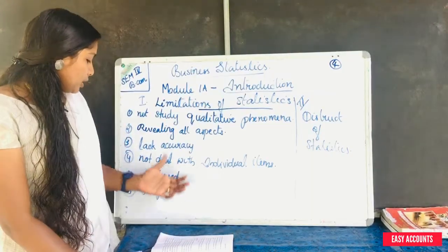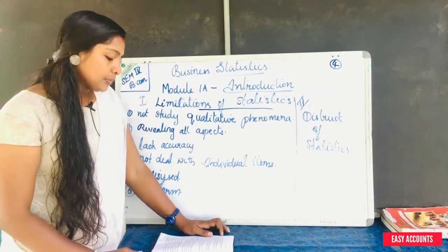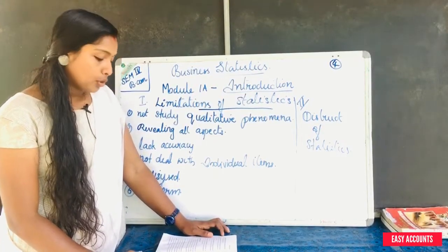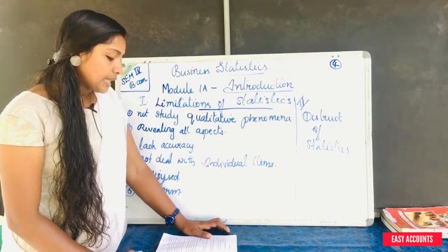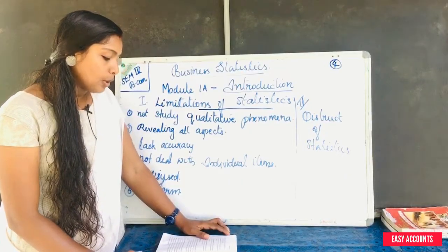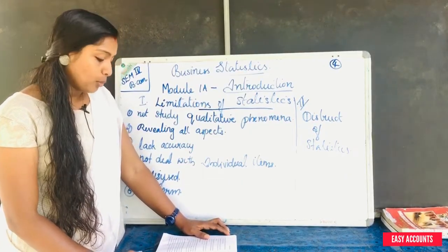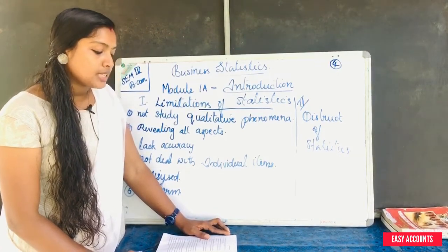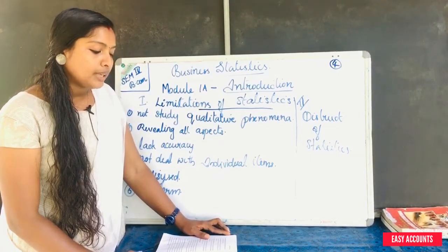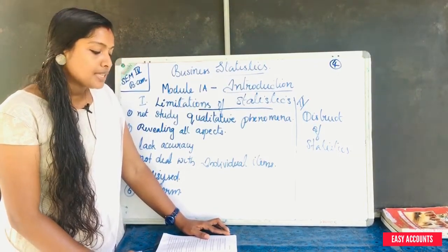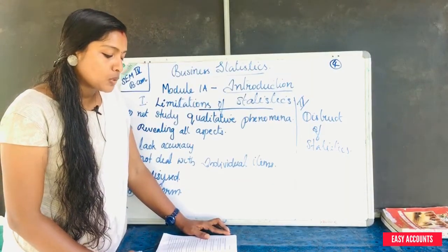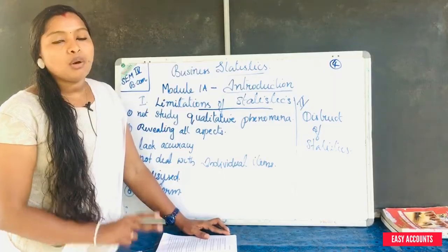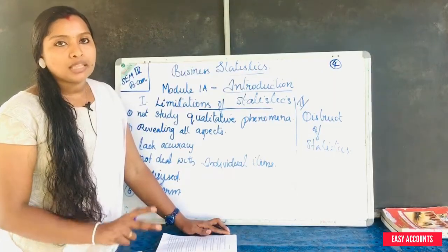The first item is the limitations of statistics. There are six points. First, statistics does not study qualitative phenomena. Then, statistics is incapable of revealing all aspects of a problem. Then, statistical laws lack accuracy. Statistics does not deal with individual items. Statistics is liable to be misused. And data must be uniform. We will now talk about each in detail.